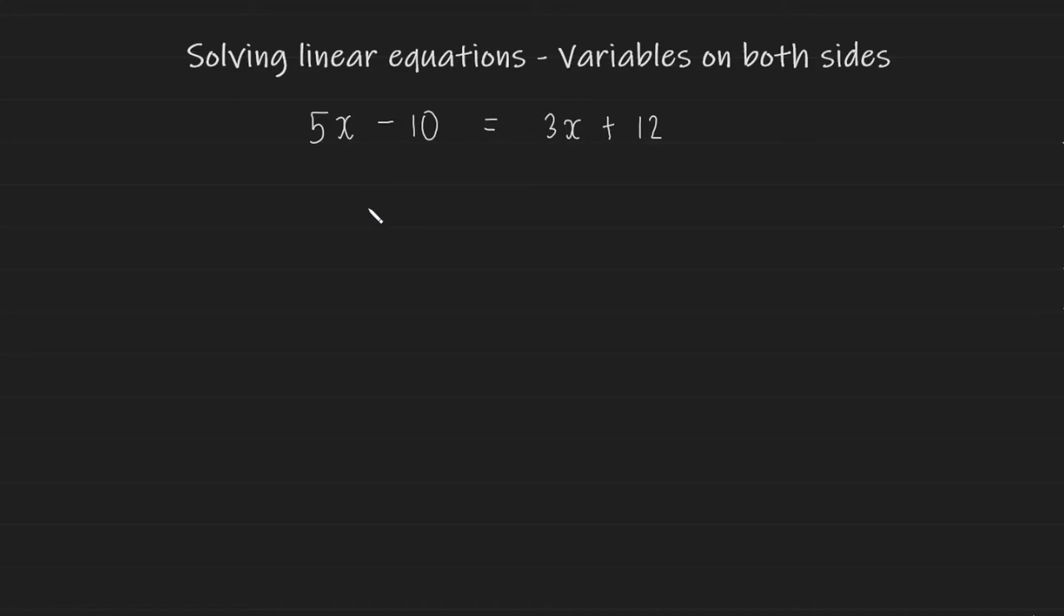The first thing you want to do is eliminate one of the variables from either side. You either want to get rid of this 3x or this 5x. In my experience, the best advice I can give you is to get rid of the smaller variable. Out of 5x and 3x, 3x is the smaller one. If you get rid of the smaller variable—let me show you what happens.